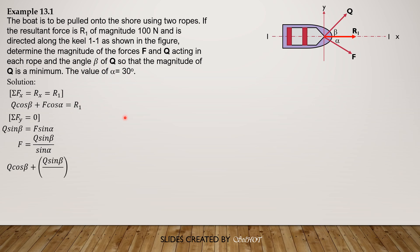Let's substitute this into the first equation. So Q cosine beta plus Q sine beta over sine alpha times cosine alpha equals R1. Simplifying, cosine over sine alpha is cotangent. So Q cosine beta plus Q cotangent alpha sine beta equals R1. Remember that alpha is constant. So next we differentiate Q with respect to beta.